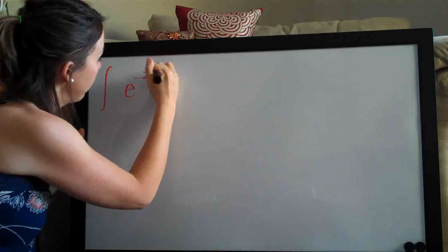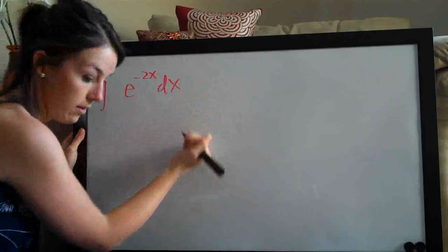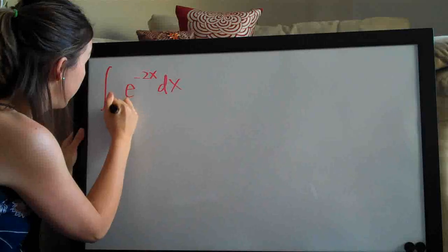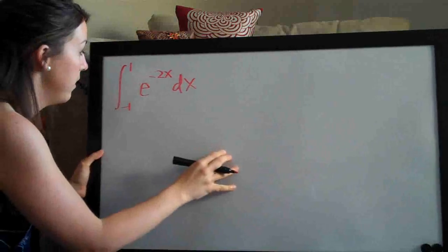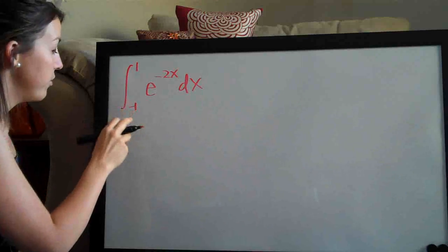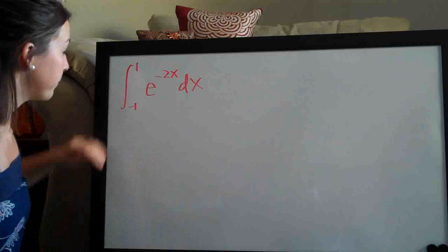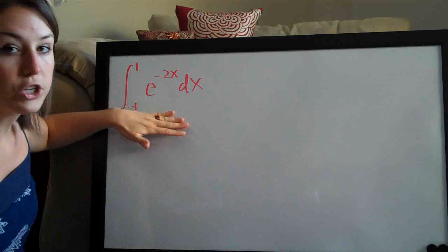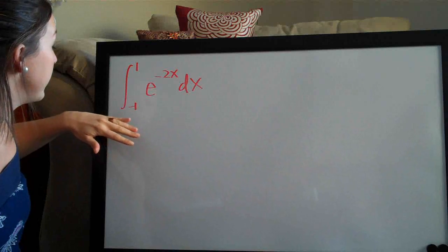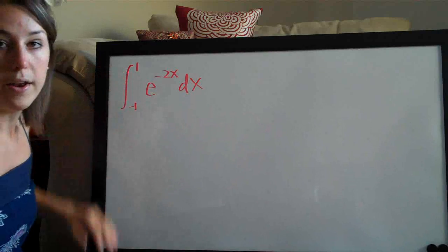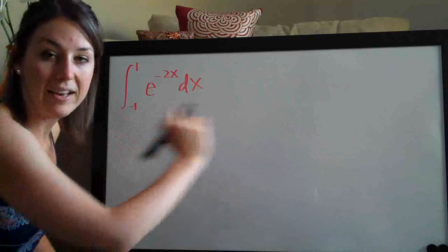So the first problem we're doing today is the integral of e to the negative 2x dx on the range negative 1 to 1. And that's all this means. Whenever you see numbers here with the integral, this means that you're going to evaluate this function between negative 1 and 1 on the horizontal x axis.